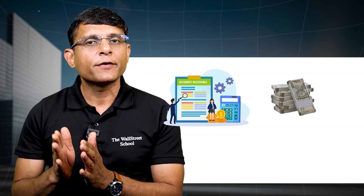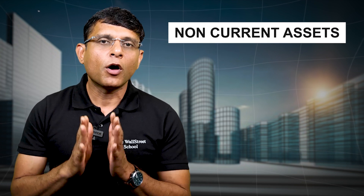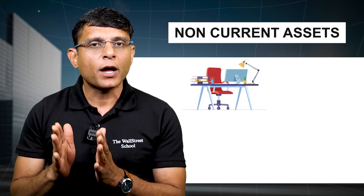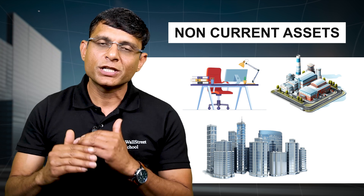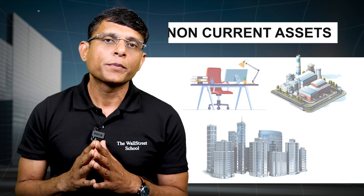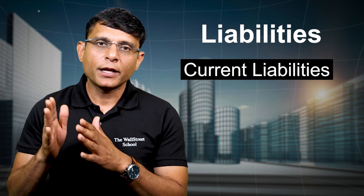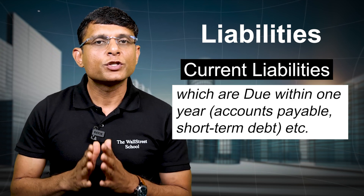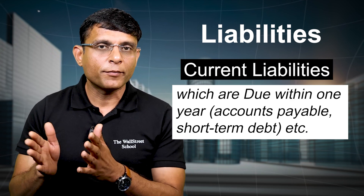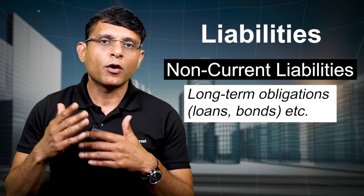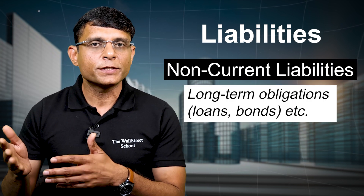Assets are typically divided into current assets, which can be converted into cash within a year — such as cash, accounts receivable, and inventories — and non-current assets, which are longer-term assets like equipment, plant, and building that cannot be converted into cash immediately. Similarly, liabilities are divided into current liabilities due within one year, such as accounts payable and short-term debt, and non-current liabilities such as long-term loans and bonds, which companies repay over a longer period of time.